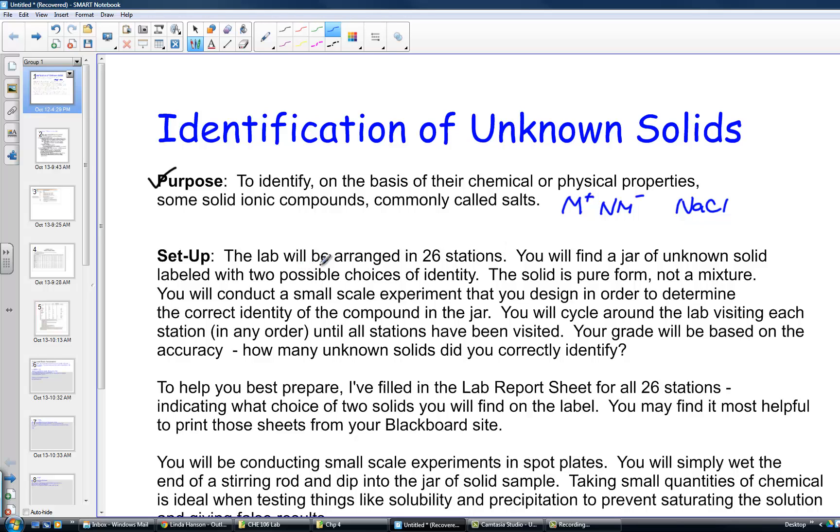We're going to come into the lab this week and there will be 26 different stations set up around the room. When you arrive there, there will be a jar labeled of an unknown solid with two possible identities right on the label. The solid in the unknown is pure form, it's not a blend of those two things, it's one or the other.